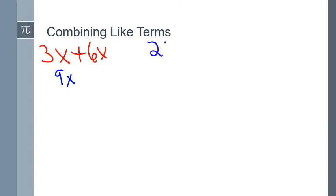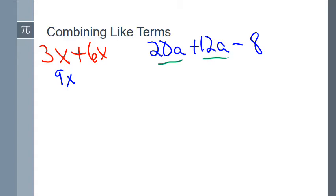How about 20a plus 12a minus 8? I have two like terms: 20a and 12a. The −8 is a constant and not a like term with those. I can combine the like terms: 20a plus 12a gives 32a, and I bring down the minus 8. Simplified: 32a minus 8. I am done.